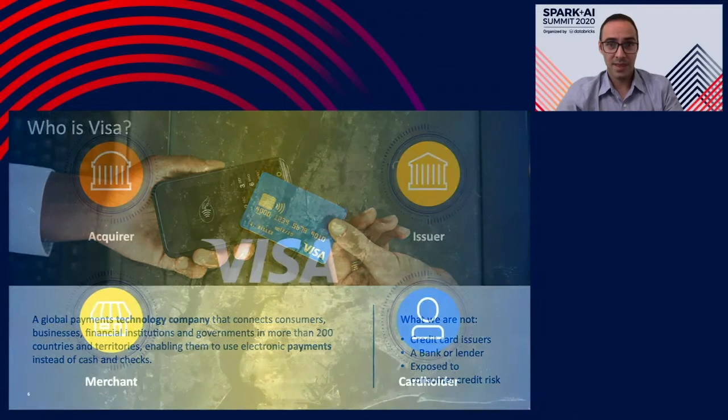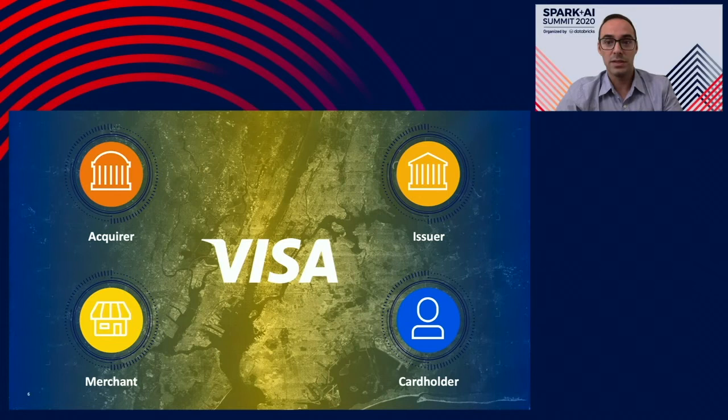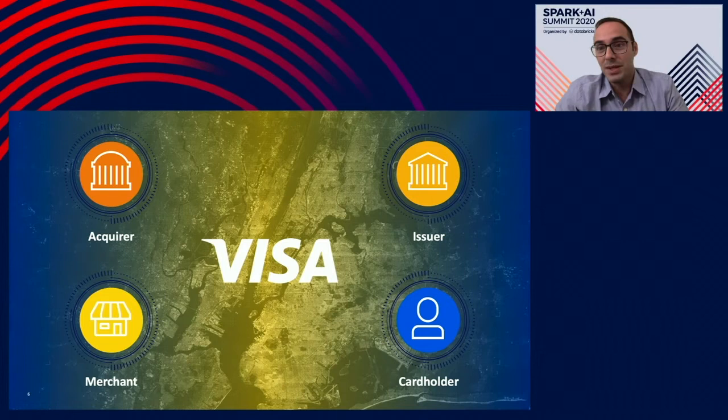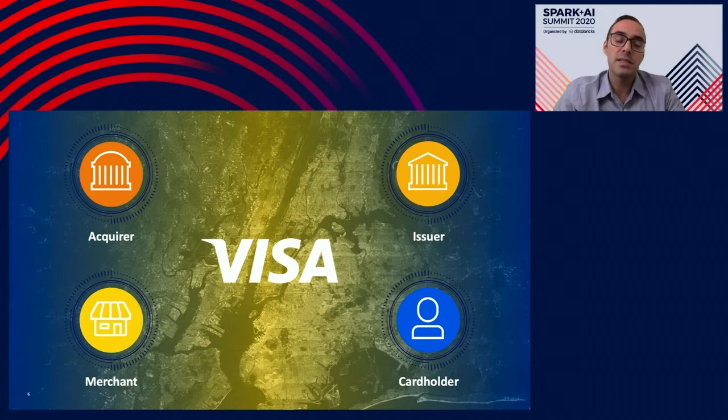We wanted to show you how a transaction flows through our payment network. Let's take a look at the four parties involved. On the right, you see issuer and a cardholder. An issuer is a bank that issues cards to people like you and me. And on the left, you see merchant and an acquirer. A merchant here could be a grocery store or a restaurant or a clothing store that we visit on a regular basis. Merchants in turn have their own bank too, which is called acquirer.